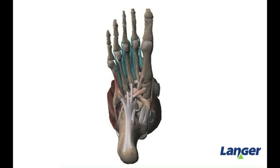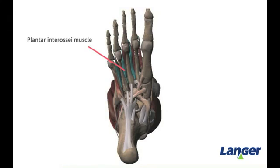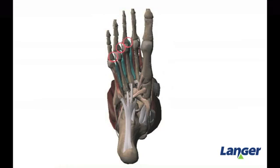The fourth and final layer is made up of the plantar and dorsal interossei muscles. The plantar interossei muscle originates medially on metatarsals 3, 4, and 5 and inserts onto the base of the proximal phalanges of digits 3 to 5. The function of the plantar interossei muscle is to adduct toes 3 to 5 at the MTP joint.